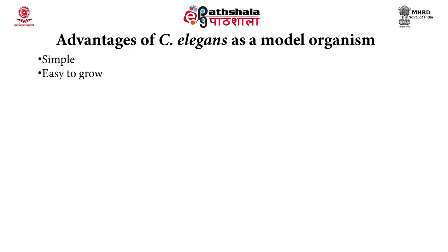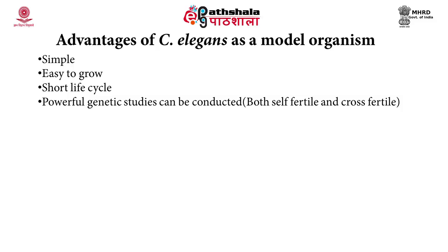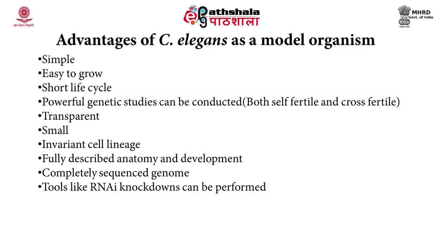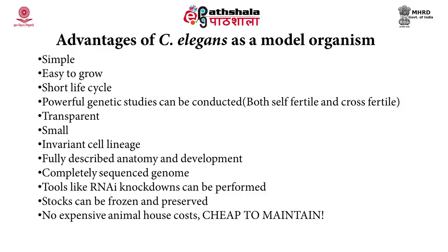It is simple and easy to grow. It has a short life cycle. Powerful genetic studies can be conducted because it is both self-fertile and cross-fertile. It is transparent and has a small size. It has an invariant cell lineage. Fully described anatomy and development are present today. The genome is completely sequenced. Tools like RNAi knockdowns can be performed easily providing a molecular handle for researchers. Stocks can be frozen and preserved. No expensive animal house costs and easy maintenance. They do not present any biohazard and they have a large progeny size.